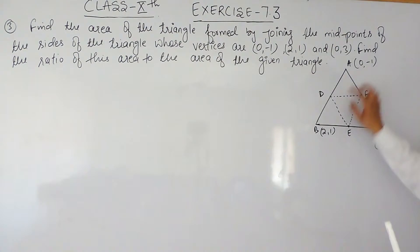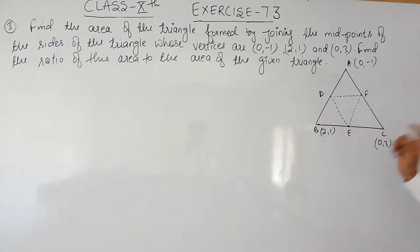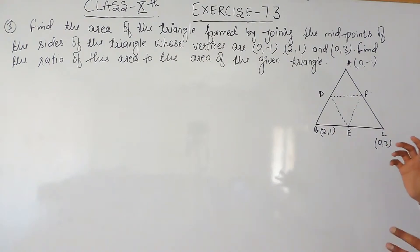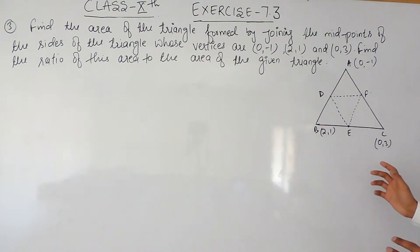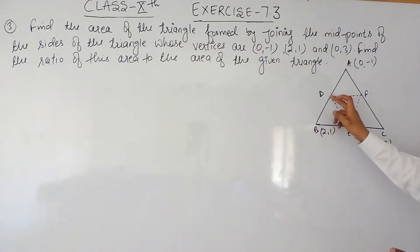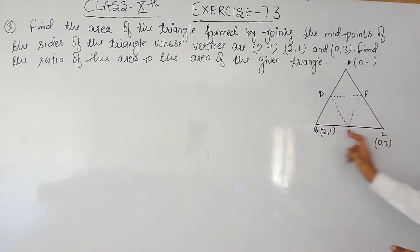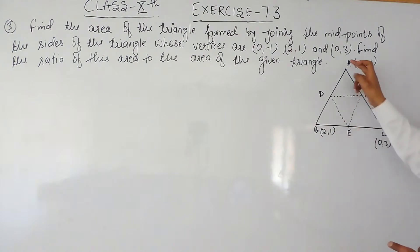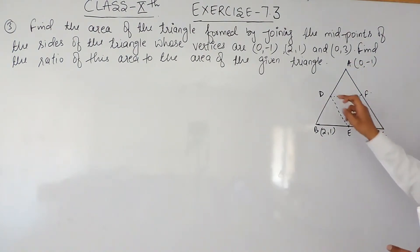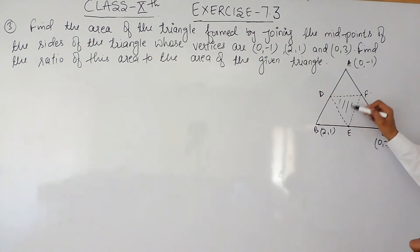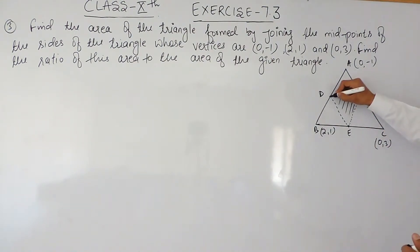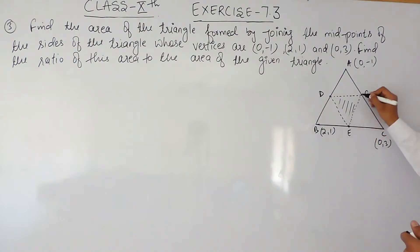A triangle is given to us with the coordinates given. We have to find the area of the triangle formed by joining the midpoints of the sides of this triangle. The first side has midpoint D, the second side has midpoint E, and the third side has midpoint F. By joining the midpoints, we need to find the area of triangle DEF. To do that, we must first know the coordinates of these midpoints.